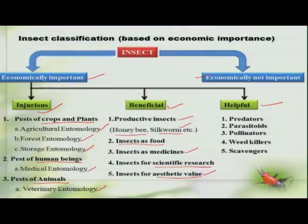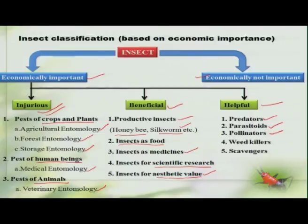Under the helpful group of insects, some insects feed on those insects which are pestiferous or injurious in nature — these are referred to as predators and parasitoids, which indirectly help in the agricultural ecosystem. The majority of insects like bees and butterflies which perform pollination are also helpful. Some insects which feed on plants considered to be weeds are referred to as weed killers. And of course, many insects help by decomposing waste material and are referred to as scavengers.